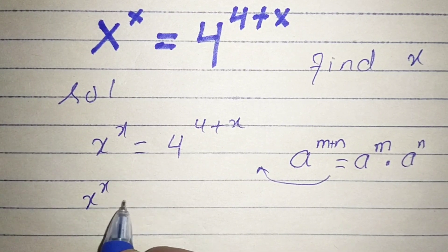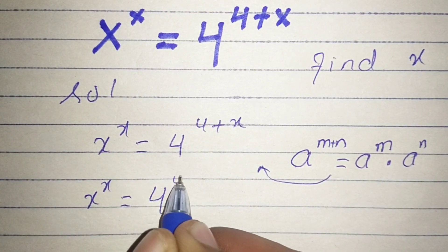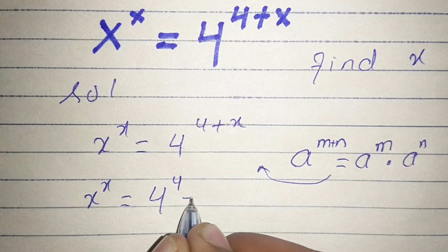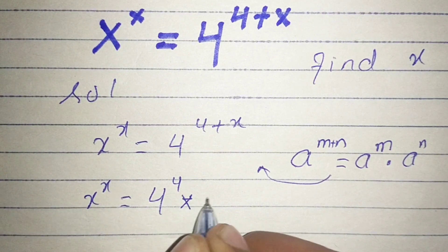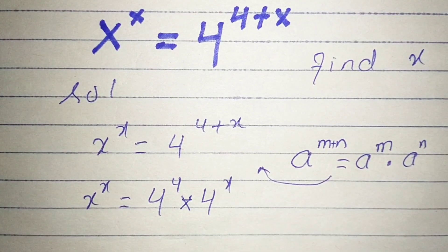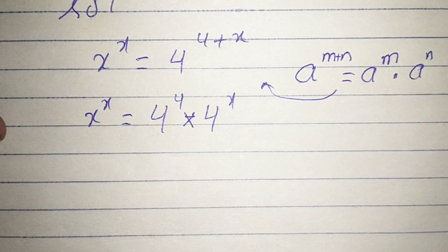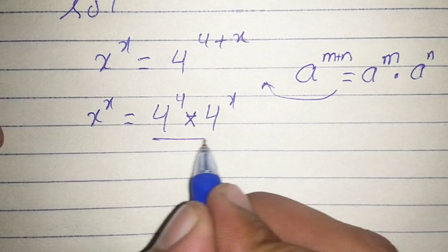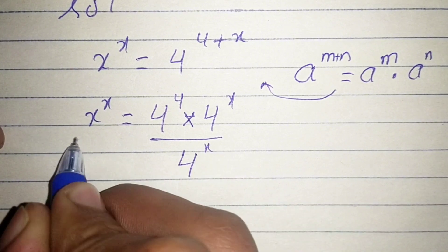I have x to the power x equals 4 to the power 4 multiplied by 4 to the power x. Now divide both sides by 4 to the power x.